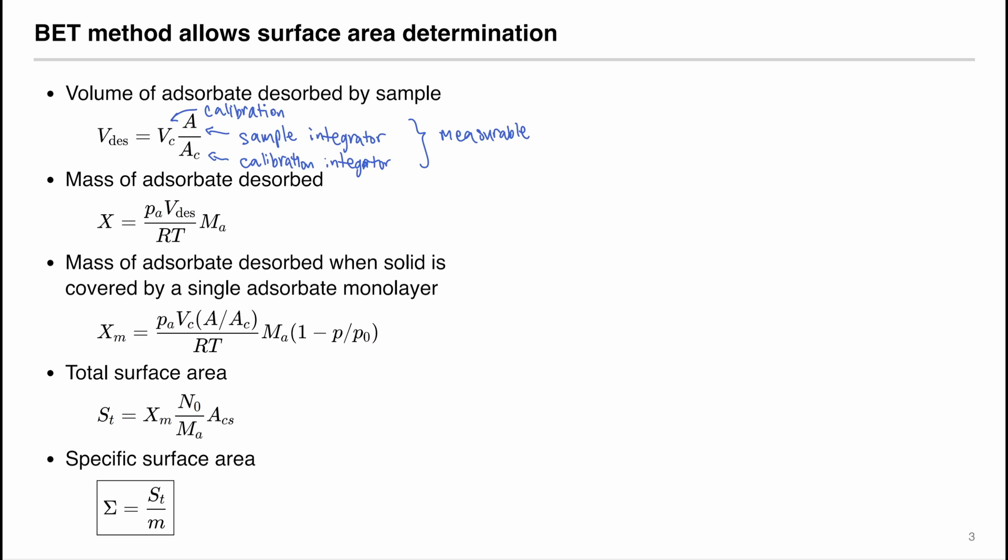The mass of adsorbate desorbed can be determined using the ideal gas law. We can substitute the V desorption into the equation. So we have p of A multiplied by V of c times A divided by Ac divided by r times t times m of A, where m of A is the molar mass.